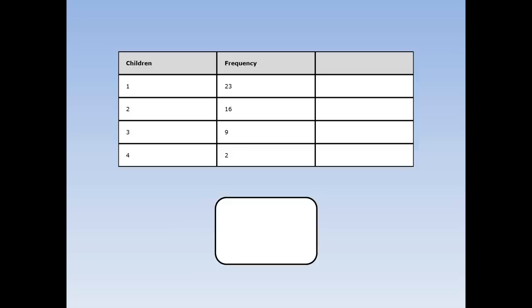To work out the median, I need to do the cumulative frequency first. How many people had 1 or below in their family? Just 23. How many people had 2 children or below? It's all the people with 1 child and all the people with 2 children: 23 plus 16 equals 39. How many people had 3 or below? 23 plus 16 plus 9 equals 48. And how many people had 4 or below? That's everybody — 50. Notice that 50 is exactly the same as the total number of people.